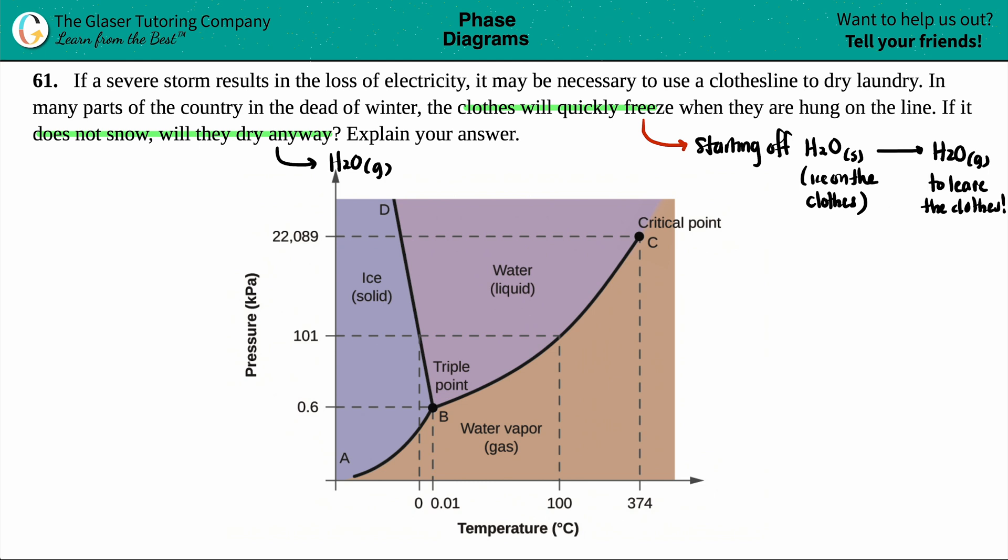So basically, if we're talking about any type of situation in which a solid is being converted into a gas, this is sublimation. Sublimation happens when you bypass over the liquid to get to a gas. But now the question is, can this occur? Can sublimation occur?